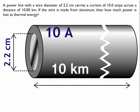A power line with a diameter of 2.2 centimeters carries a current of 10 amps across a distance of 10 kilometers. If the wire is made from aluminum, then how much power is lost as thermal energy? So here's my wire. I see the diameter of the inside piece of the wire that's carrying the electricity of 2.2 centimeters, carrying 10 amps across a distance of 10 kilometers.